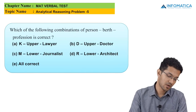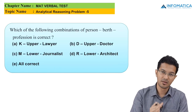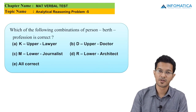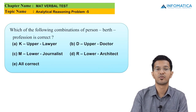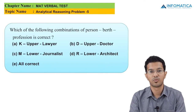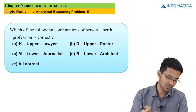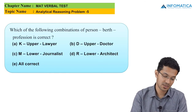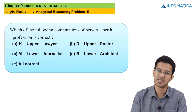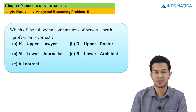For the last MCQ, it asks which combination of person, berth and profession is correct. We need to identify the right person, berth type and profession together. From the table, R occupies the lower berth and is the architect. So option D — R, lower berth, architect — is the correct answer.